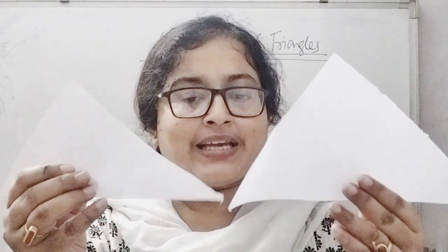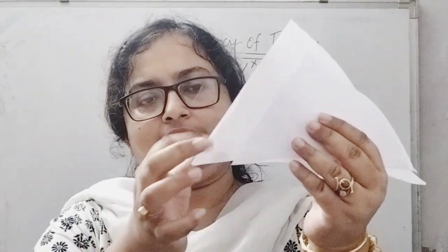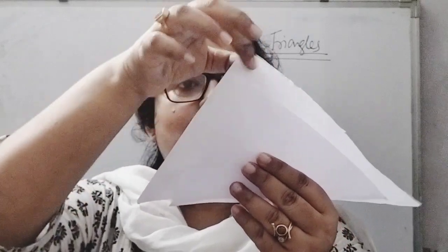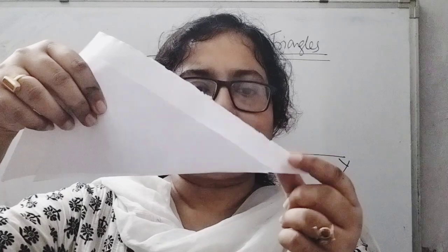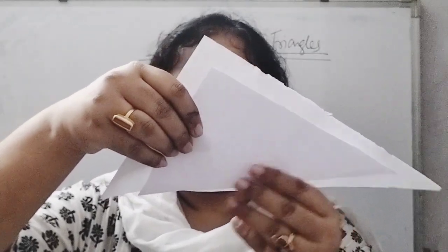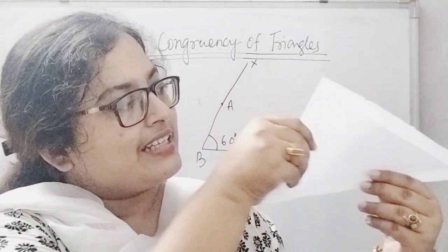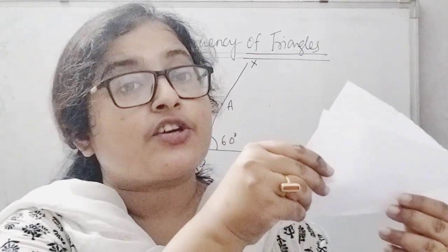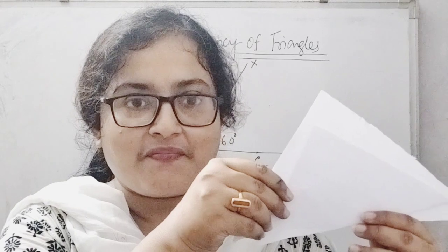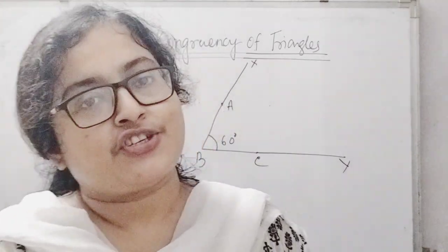For example, I have taken these two triangles. You can see that this particular angle is equal to this particular angle in measurement, measurements of these two angles are also equal, and measurements of this pair of angles are also equal — but if you keep one triangle on the other, they will not coincide because their corresponding sides are not of equal measurements. Angles are equal, corresponding angles are equal, but the sides are not equal in measurements. So obviously they are not congruent, and that is the reason angle-angle-angle can never be a condition of congruency.